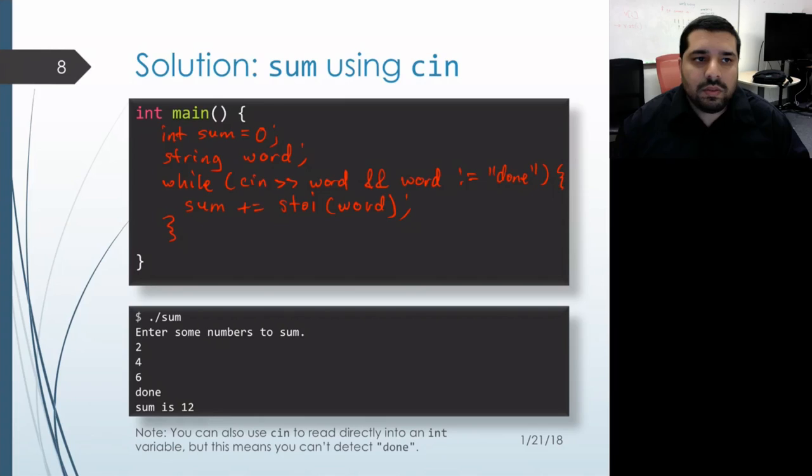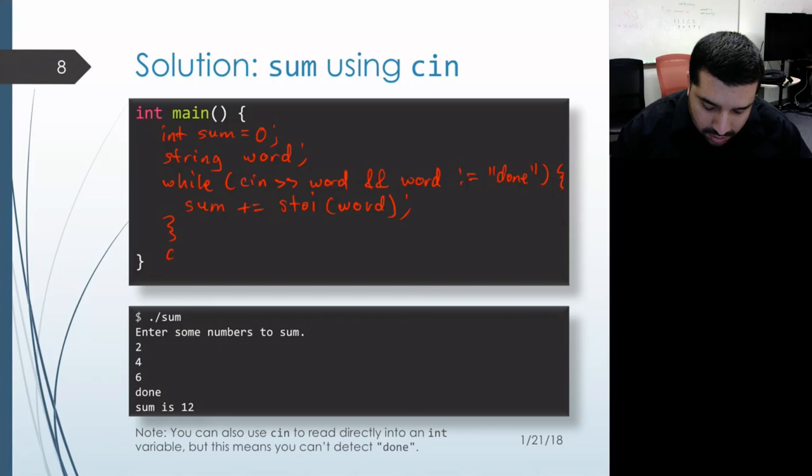Once the loop is complete, either because the user entered the word done or because we've reached the end of the input stream, then what we can do is print out the sum of all the items that we've seen.